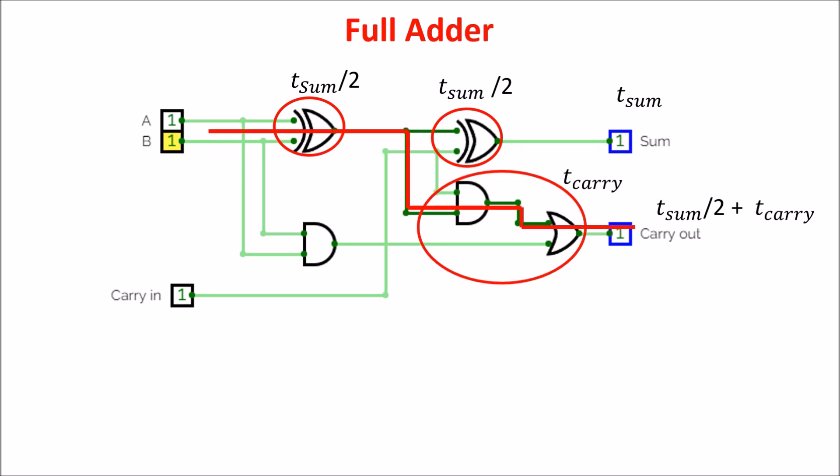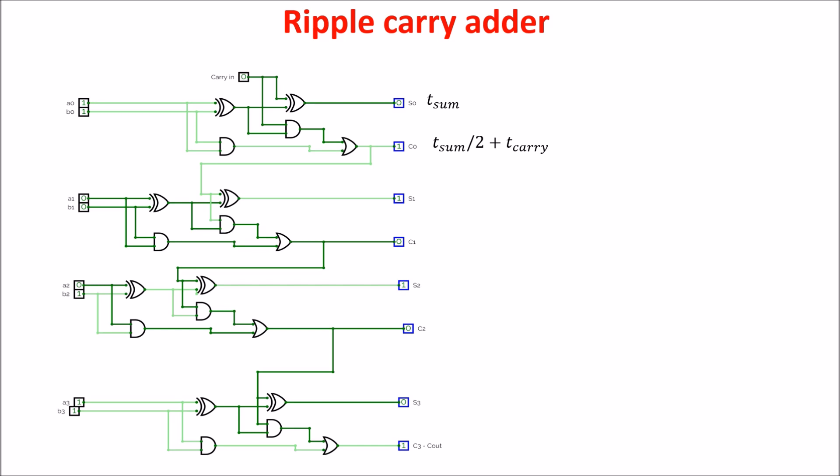So, for the first carry out, we have to wait T sum over 2 plus T carry, and for the first sum we have to wait T sum. Now, we see the delay of 4 bits ripple carry adder, which is composed by 4 full adders. All the A and B bits arrive parallel, as well as the first carry in, or C0. We saw already the first sum S0 arrives after T sum delay, and the first carry arrives after T sum over 2 plus T carry.